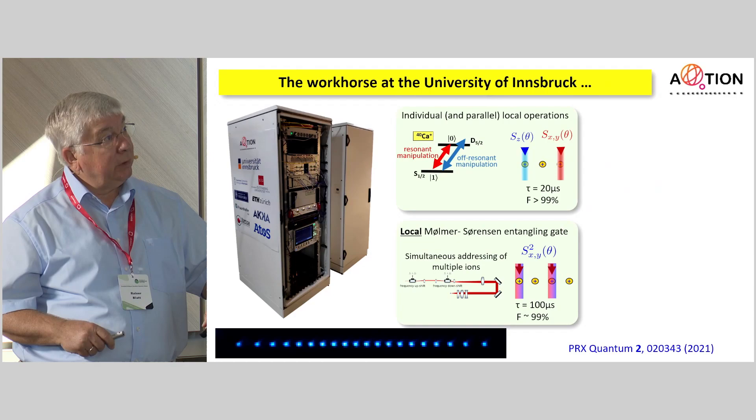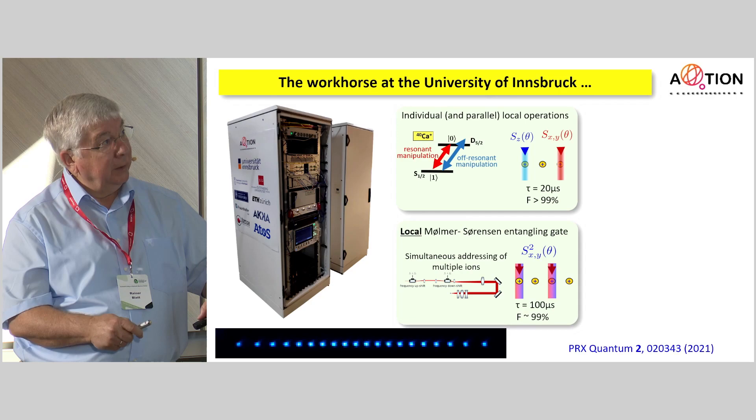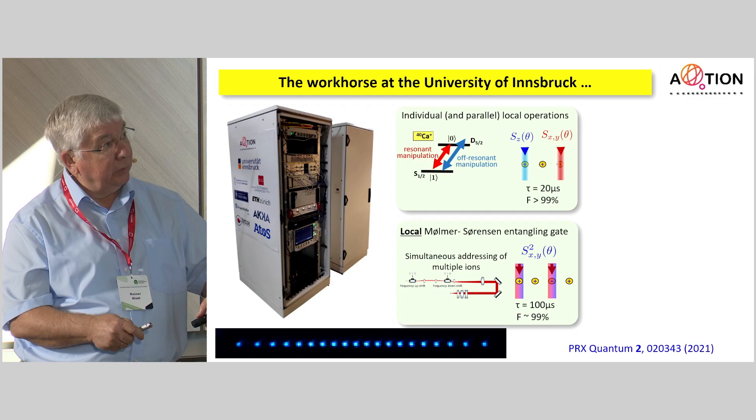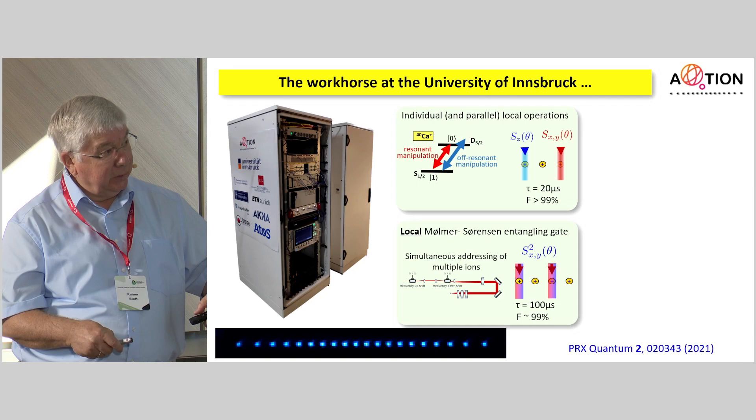So what can we do with that? Of course, all of these things can be done that I've shown you before. In addition, we can do individual and local operations. That is, we can combine these things simultaneously by making resonant manipulations on one ion, while we do a non-resonant manipulation on the other one. Or we can even do local Mølmer-Sørensen entangling gate operations by shining these two lasers, these two bichromatic laser beams simultaneously to two ions somewhere in this register.